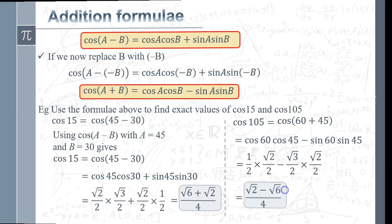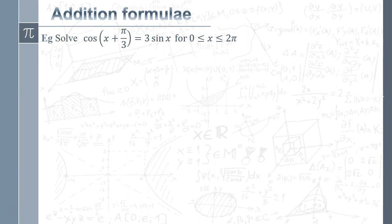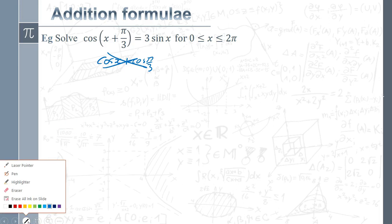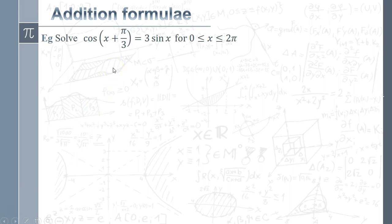Now let's look at solving an equation using addition formulae. We have cos(x + π/3) = 3 sin x, and we're working in radians. A critical warning: never expand cos(x + π/3) as cos x + cos(π/3) — that's completely wrong. We've seen that cos(A + B) is not like ordinary brackets. Don't treat it like normal algebraic expansion.